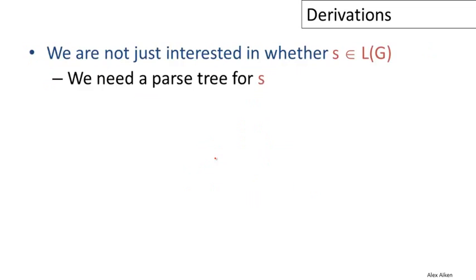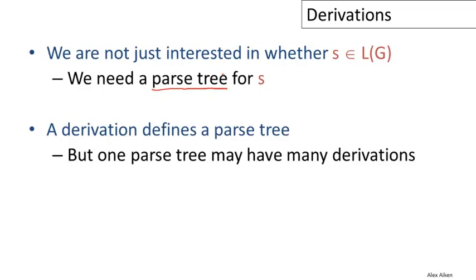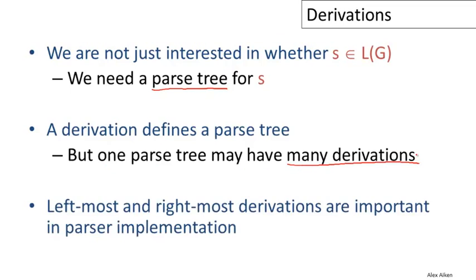To summarize, we're not just interested in whether a string is in the language of a particular context-free grammar. We need to have a parse tree for that string. A derivation defines a parse tree, but it turns out that one parse tree in general has many derivations. In particular, we're interested in the leftmost and rightmost derivations. These are the two kinds of derivations that are important in parser implementations.